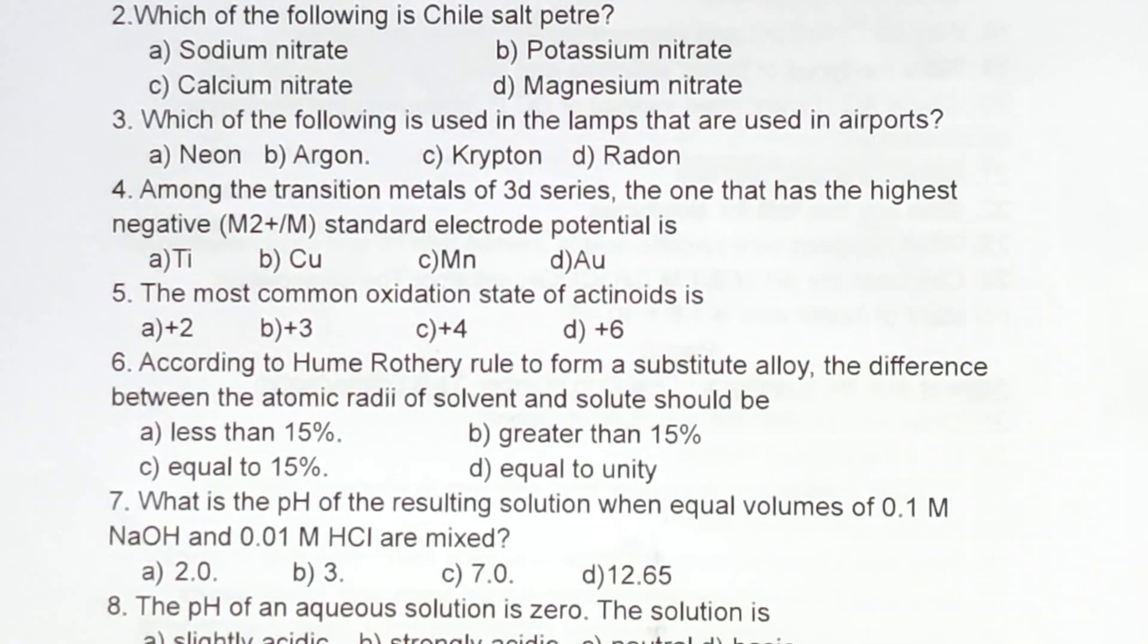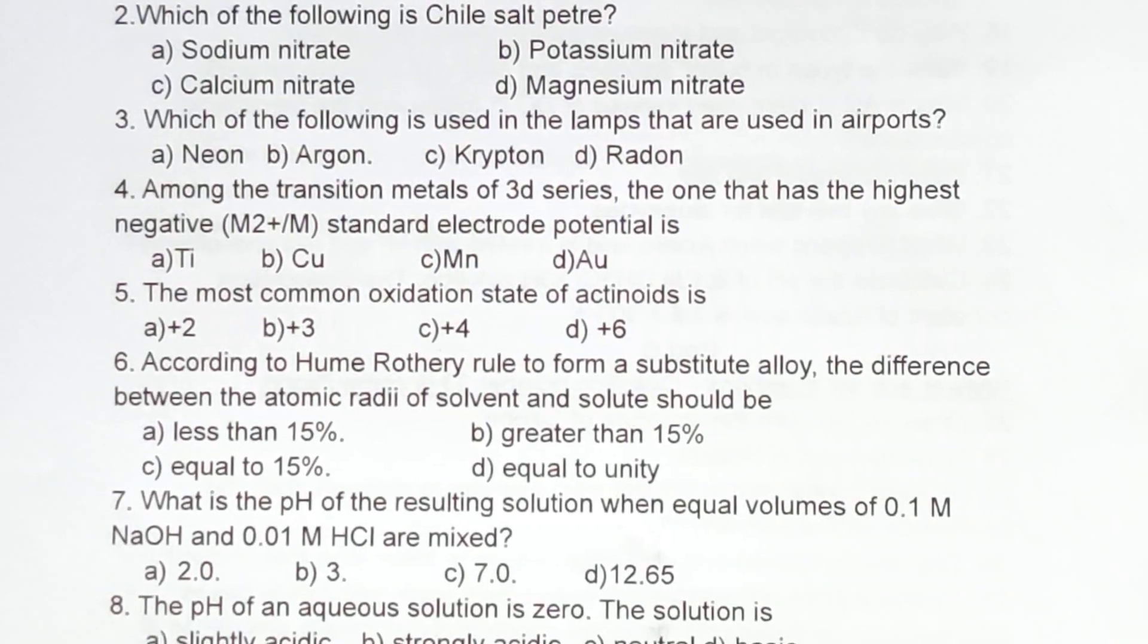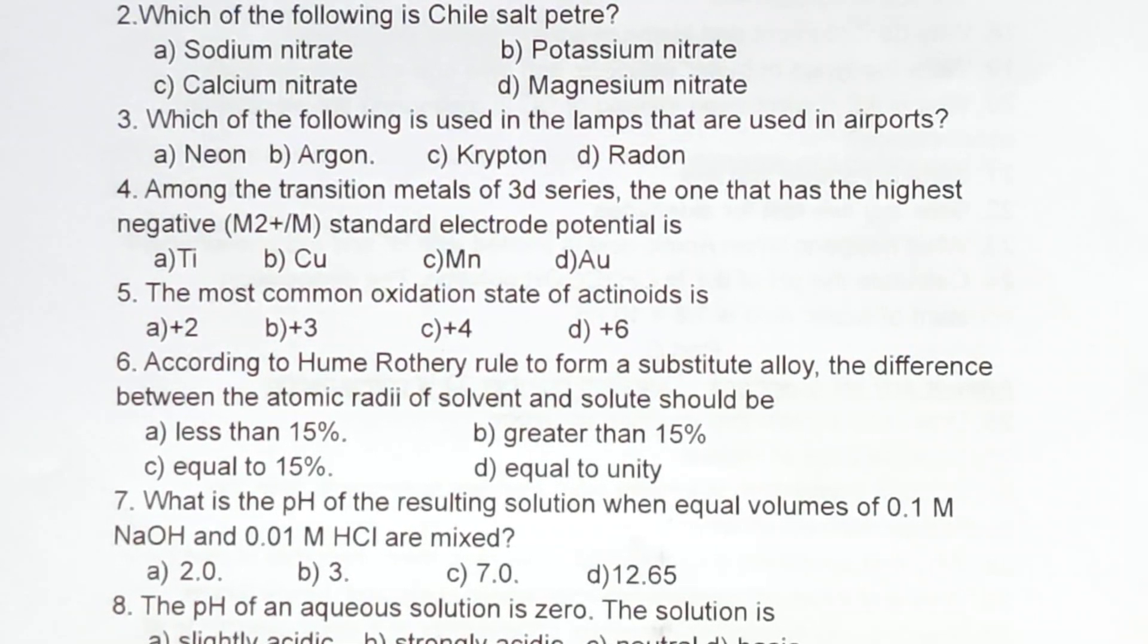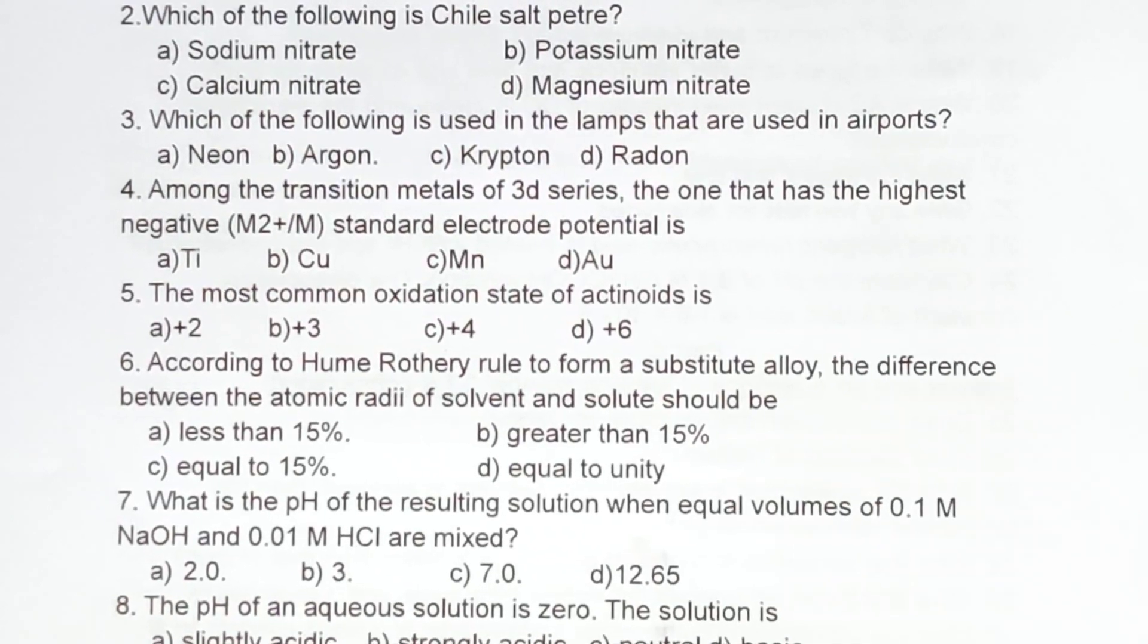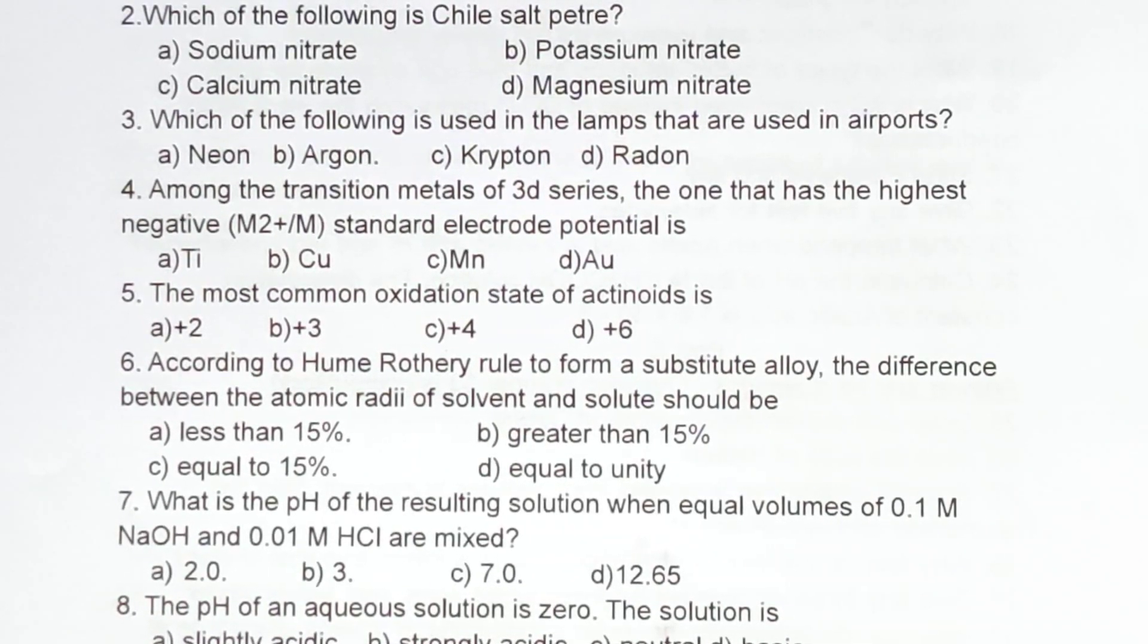Fourth one: among the transition metals of 3D series, the one that has the highest negative standard electrode potential is? The most common oxidation state of actinoids is? According to Hume-Rothery rule,